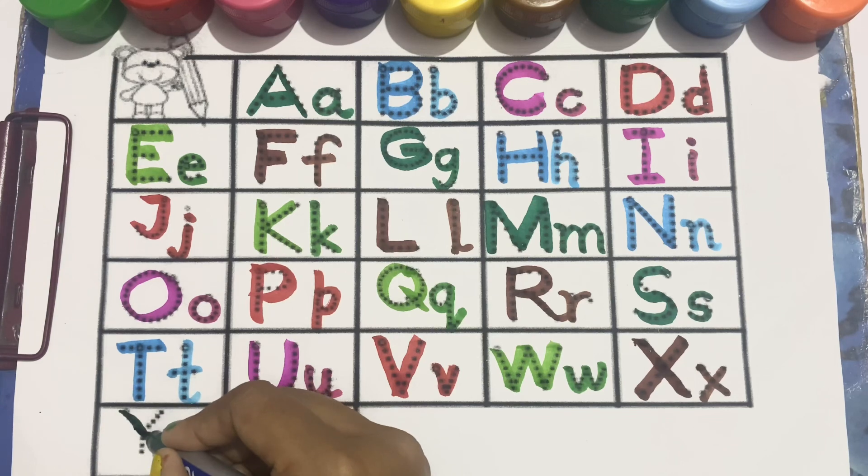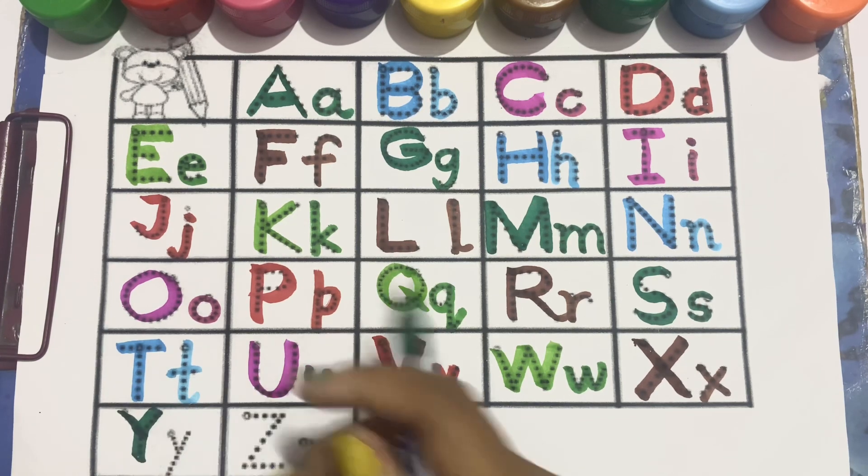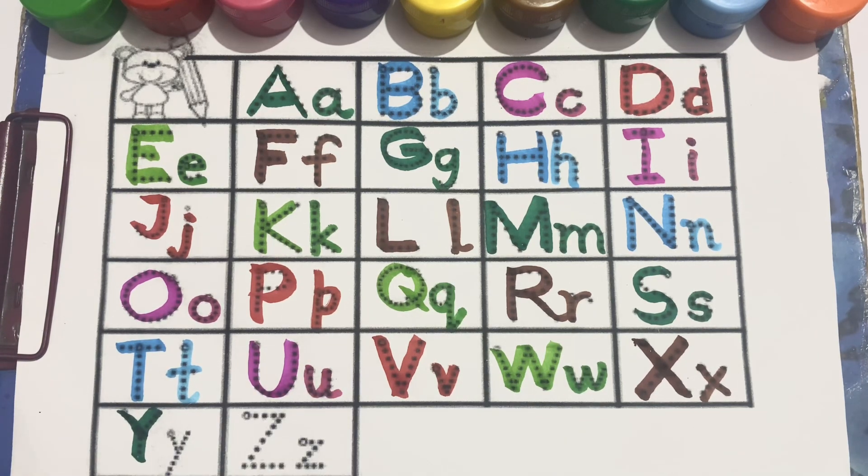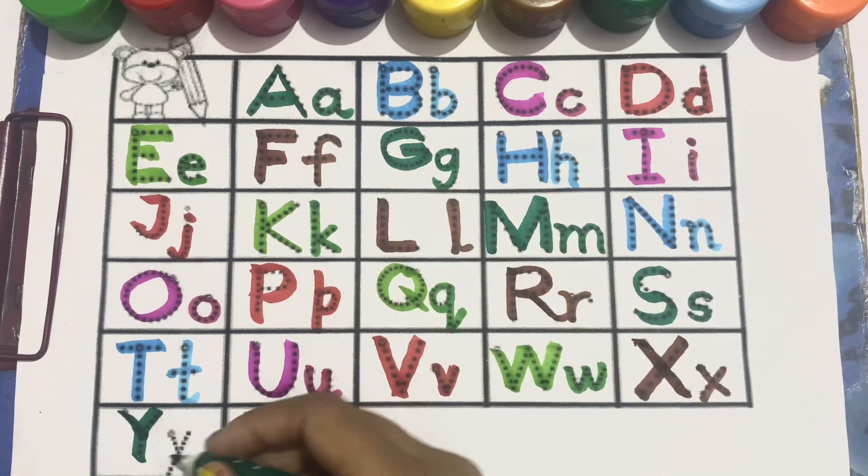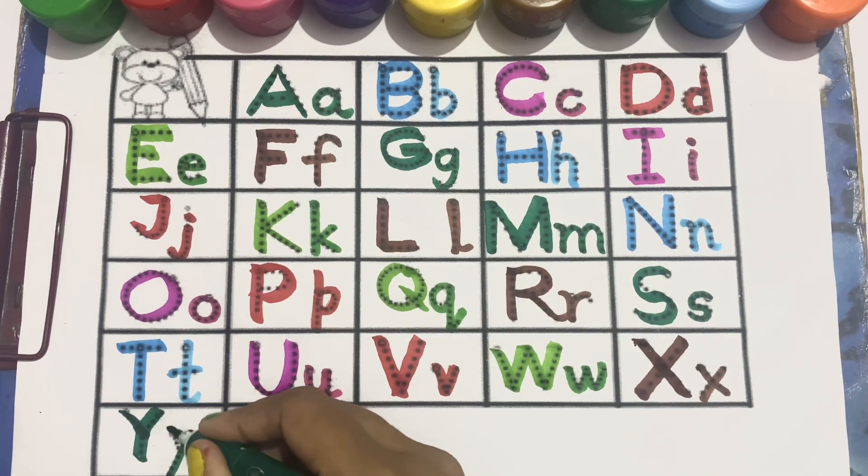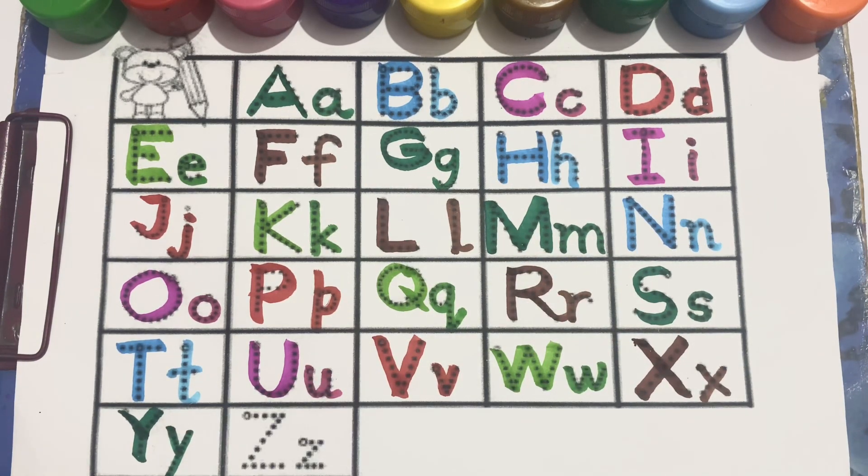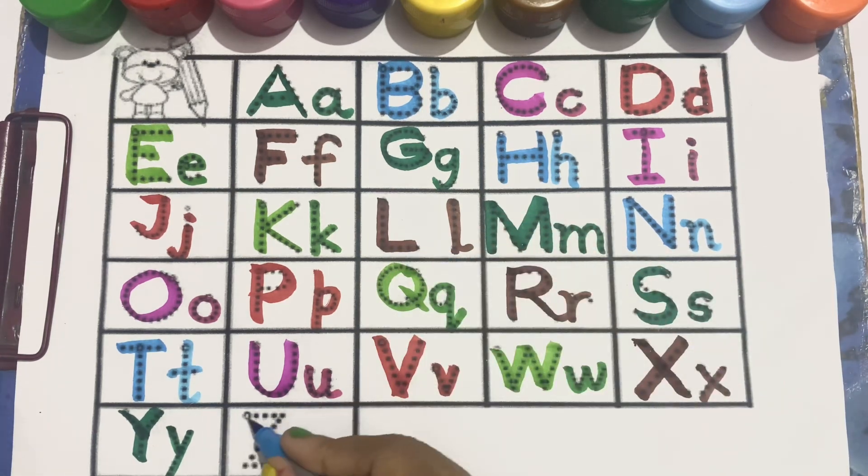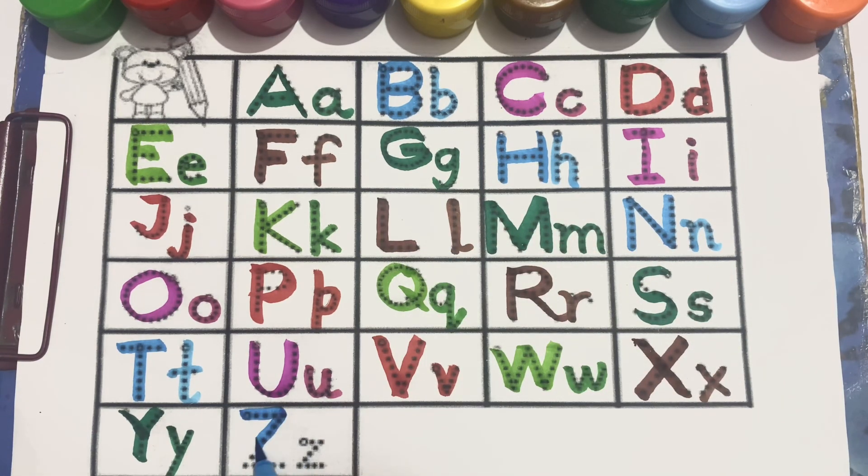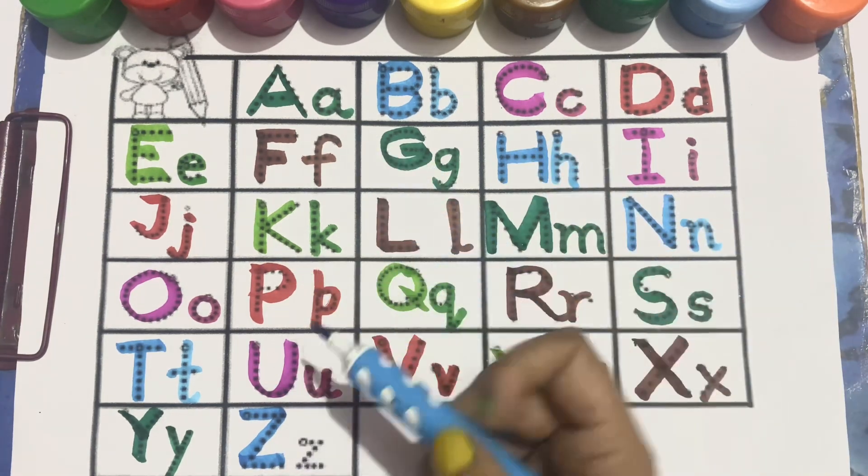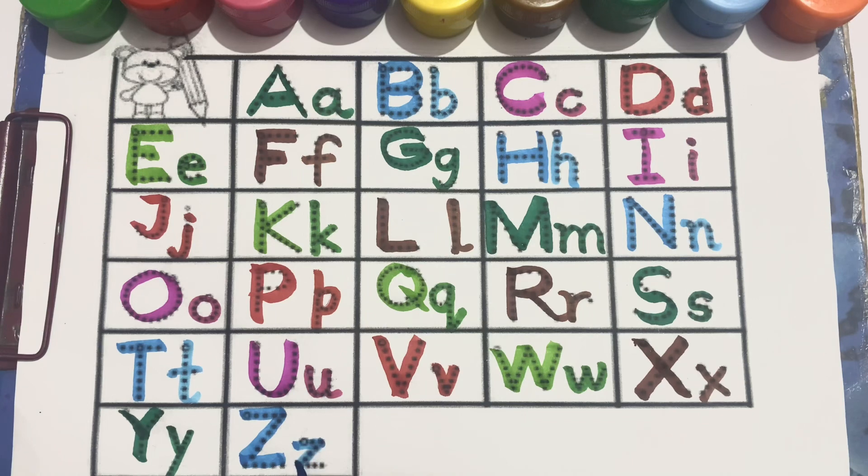Green color, Y, capital Y, now small y. Sky blue color, Z, capital Z, now small z.